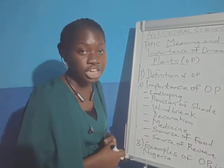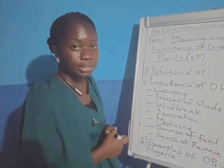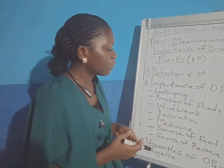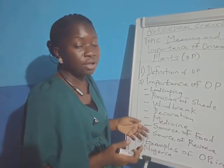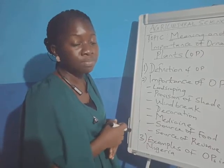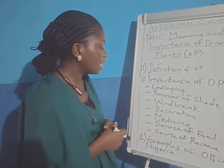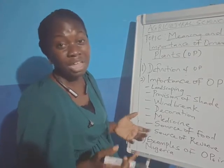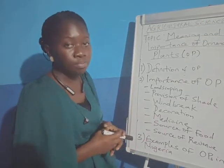Then provision of shade. Ornamental plants provide shade by protecting people from direct sunlight, so people can sit under the shade. Then it can also be used as windbreak. We have some ornamental trees that can be used as windbreak.